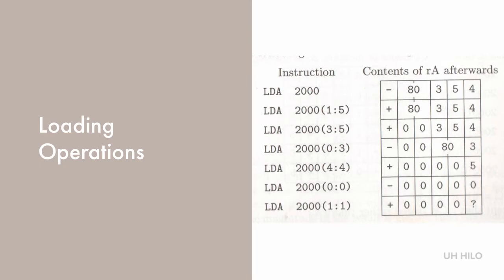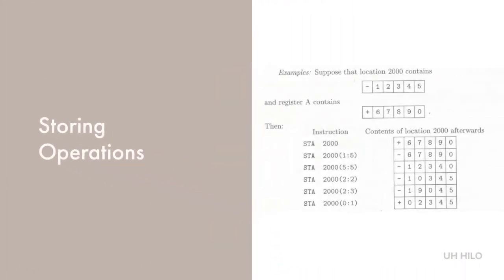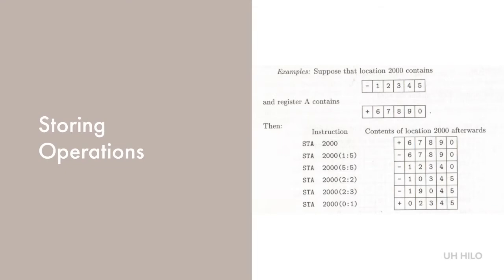There is also a set of commands for loading registers with values of the opposite sign. Likewise, there are a variety of operations for storing values. STA is store A — a portion of the contents of register A replace the contents of memory location M, while the other parts of M remain unchanged.